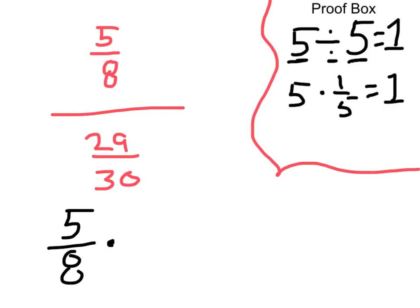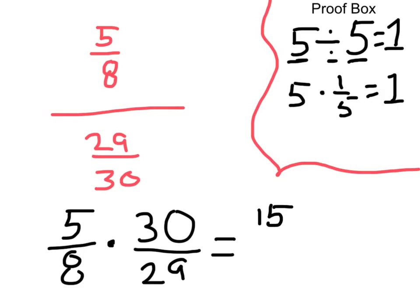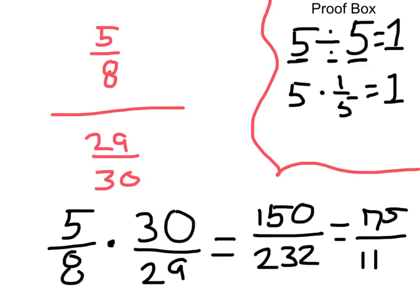And then from that point on, it is a simple multiplication problem. 5 times 30 is 150. 8 times 29 is 232. And we can further simplify that down to 75 over 116.